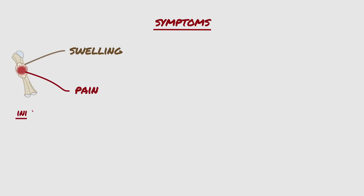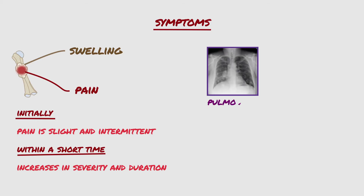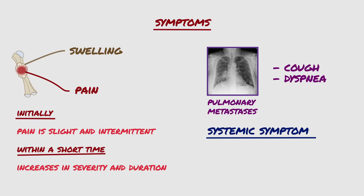The most common initial symptoms are pain and swelling. Initially, the pain is slight and intermittent, but within a short time it increases in severity and duration. Pain is usually worse at night and gradually requires medication. Some patients may have pulmonary metastases, and in those situations individuals can also have a cough or dyspnea. The patient may also have systemic symptoms such as fever, weight loss, and decreased appetite.